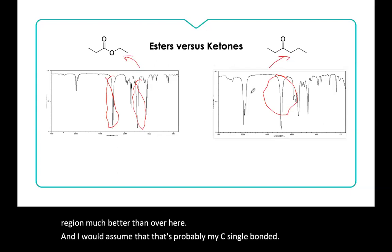Well, I'm seeing that I have my C double bonded O here and my C double bonded O right there. I see on this one that I have a pretty good absorption in our single bond region, much better than over here. And I would assume that that's probably my C single bonded O. Of course, it's my ester and the other one is my ketone.